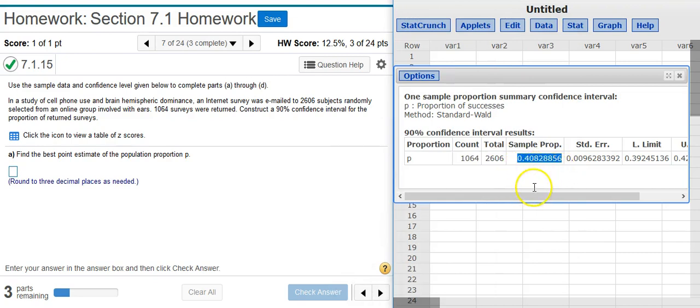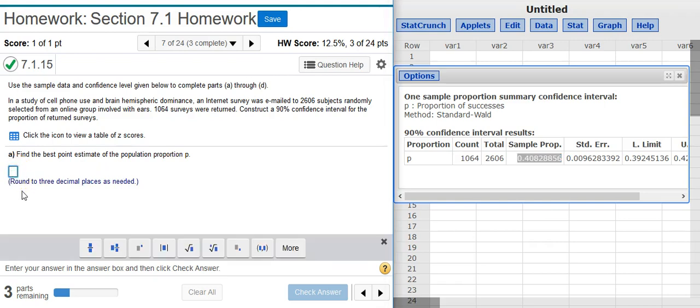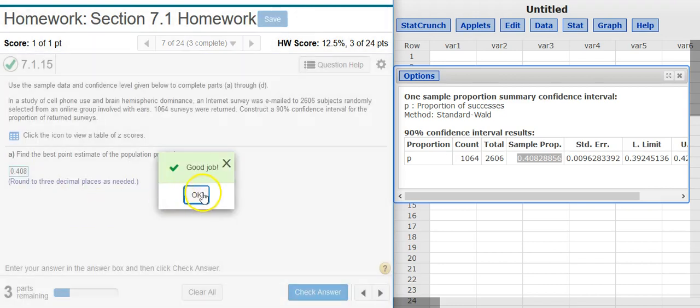Just take the number of successes, divide by total number of observations. Let's see, I'm going to get the same number here. But I just like doing it in StatCrunch, because I've got to go through those steps anyway to get the confidence interval, which it's going to ask me later on the problem. So it's just easier if I just use this. So here's the number I need. Good job.